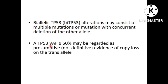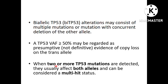Biallelic TP53 alterations consist of multiple mutations or mutations with concurrent deletion of the other allele, detected by cytogenetics. If the variant allele frequency is ≥50%, it can be regarded as presumptive evidence of copy number loss on the trans allele, even without cytogenetic findings. When two or more TP53 mutations are detected on NGS, they usually affect both alleles, so multiple TP53 mutations on NGS can be considered as biallelic status.